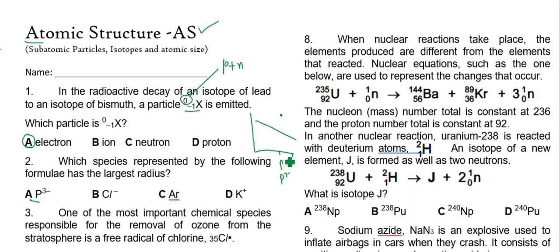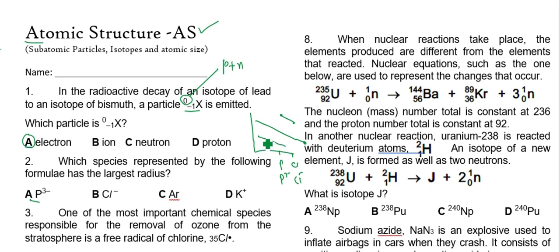Chlorine is the next member after phosphorus. When the chloride ion is formed, its size is bigger than its parent atom but smaller than the phosphide ion, because in the period from left to right the size is decreasing. Argon's size is smaller, and potassium is in the fourth period — its size is way smaller than the others in this series. So the phosphide ion is the right answer.